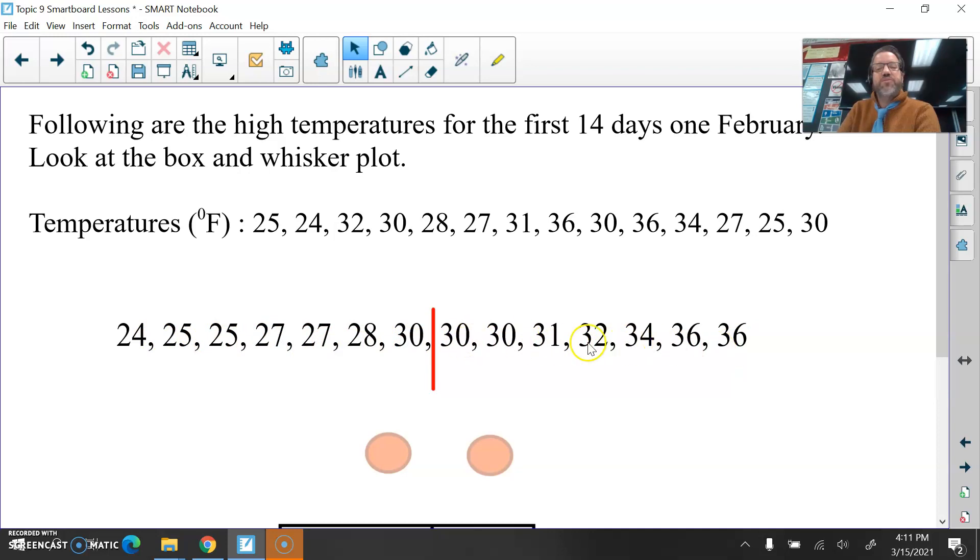And now what I want to do is find the median of this entire data set. If there are 14 numbers and I want to cut it in half, what's half of 14? Seven. So I am going to count seven: one, two, three, four, five, six, seven. And I'm going to put a line here, right here. And now I have seven temperatures listed here and seven temperatures listed over here. The median of this entire data set is 30 degrees. That's the median temperature over that 14-day span.